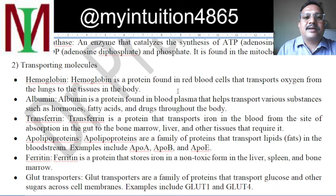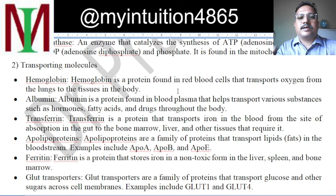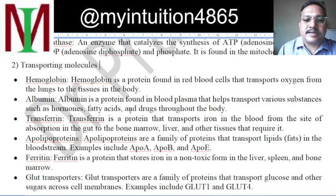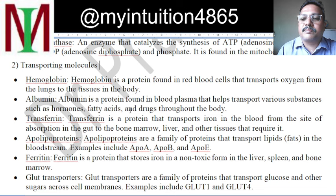A fast transportation network — the bloodstream system — takes the oxygen in and removes the carbon dioxide. Albumin is a protein found in the blood plasma which helps transport various substances such as hormones, fatty acids and drugs throughout the body. Transferrin is a protein which transports iron in the blood from the site of absorption in the gut to the bone marrow, liver and other tissues that require it.